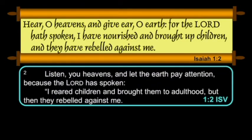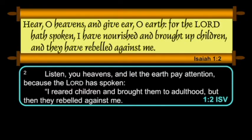The ISV says: "Listen, you heavens, and let earth pay attention, because the Lord has spoken. I reared children and brought them to adulthood, but then they rebelled against me." As you compare the ISV with the King James, it reads a little smoother for our ears. But I want you to notice something that some commentators don't pick up on: they talk a lot about the fatherhood of God as being a New Testament concept. The fatherhood of God is right here where he says "I brought up children." The concept of God as our father is implicit in Isaiah's writing.